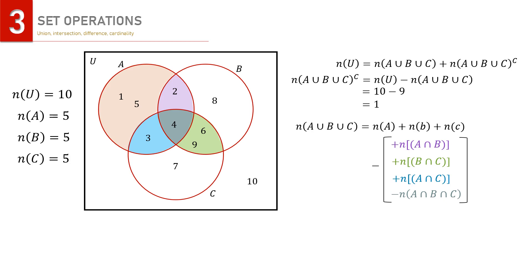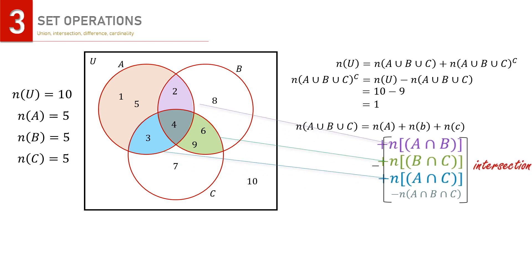The formula for n(A∪B∪C) is the summation of n(A), n(B), and n(C), then subtract all pairwise intersections to avoid double counting, and finally add back n(A∩B∩C). This is because when we add n(A), n(B), and n(C), the three-set intersection is counted three times, but subtracting the three pairwise intersections cancels it out completely. Since it must be counted once in the union, we add it back at the end.